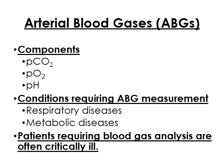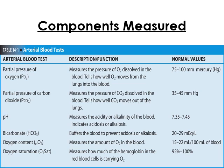Patients requiring blood gas analysis are often critically ill. The components measured include PO2, or partial pressure of oxygen, which measures the pressure of oxygen dissolved in the blood — normal value is 75 to 100 mmHg. For pH, it measures the acidity or alkalinity of the blood; the normal pH is 7.35 to 7.45.